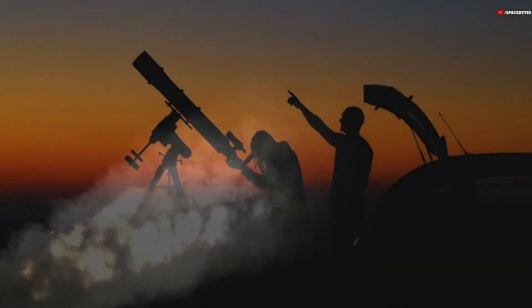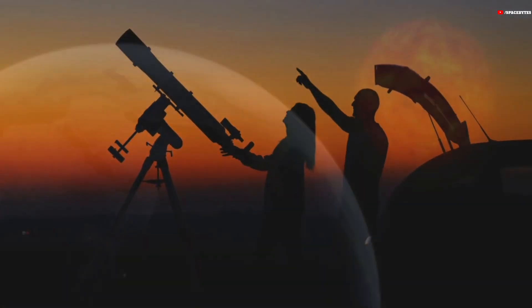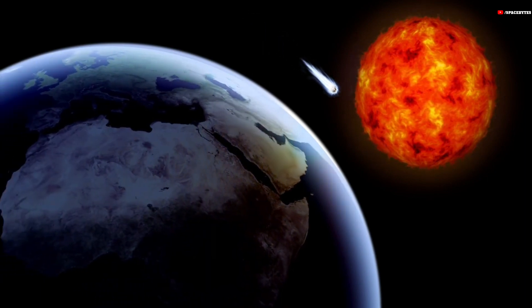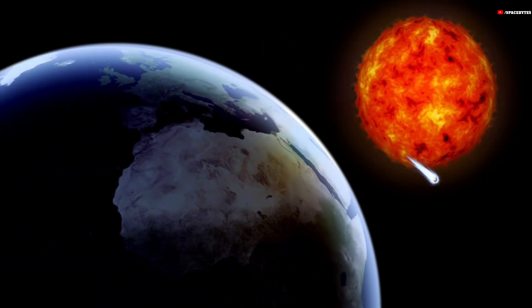Since Comet Nishimura has entered Earth's orbit around the Sun, the comet is now a naked-eye object. On September 17, the comet will be at its closest to the Sun.